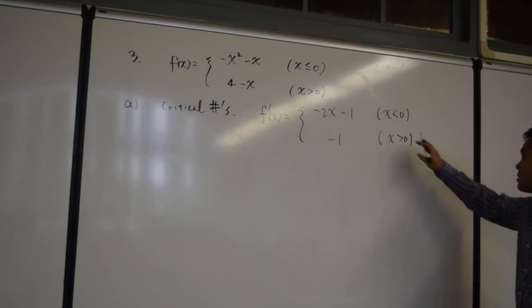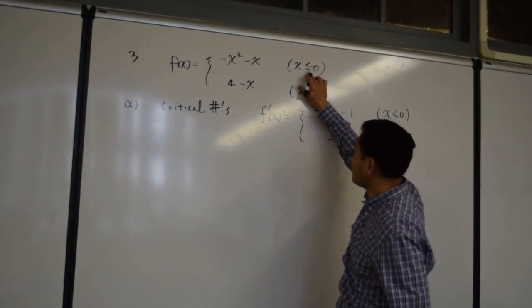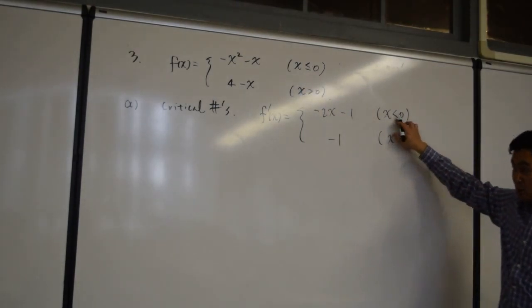And I have to exclude zero. Why is that? Here I have included zero, but here I have to exclude zero.